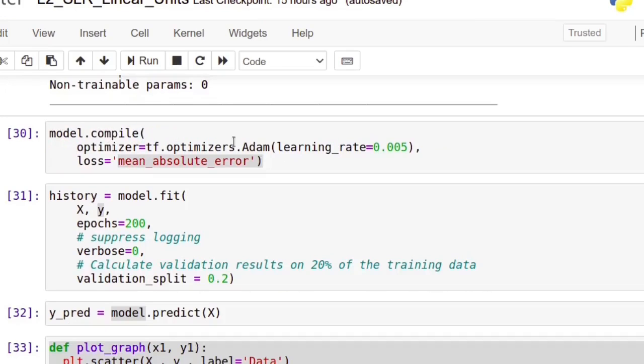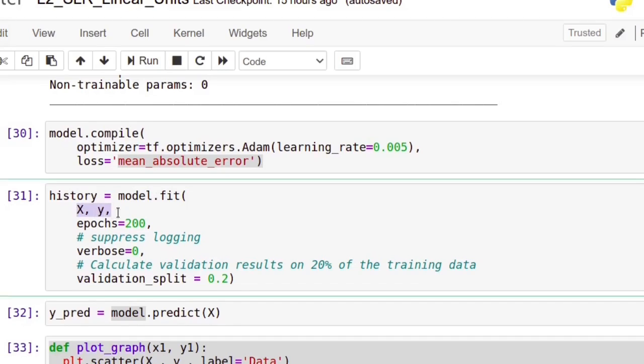Compile the model with Adam optimizer with learning rate 0.05. Here we are using simple loss function, mean absolute error. You will see these loss functions and optimizers in next classes. Then train the model with input and output. Here I am not using any training and testing sets. I am training the model with entire data. Repeat it for 200 epochs. Then model will be trained on this given dataset.